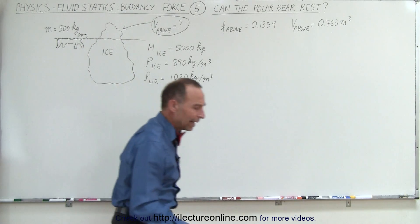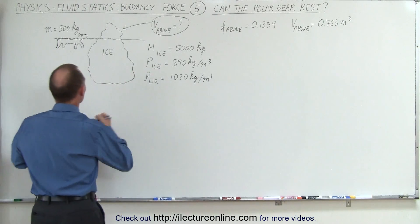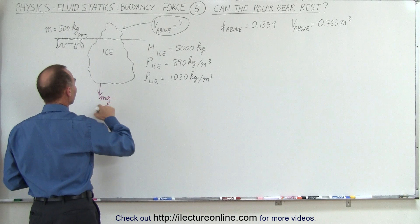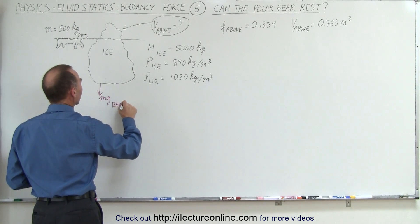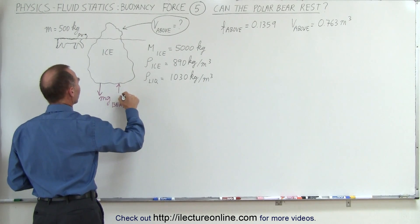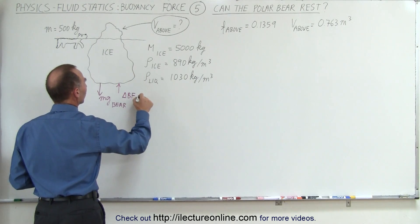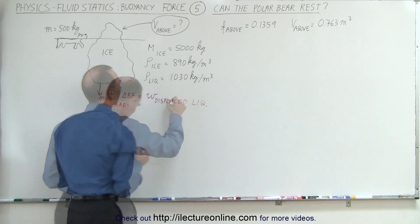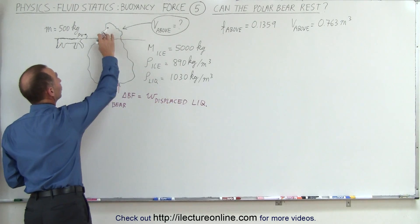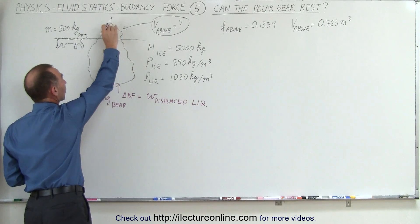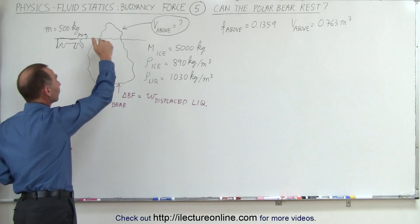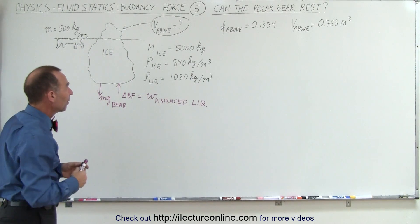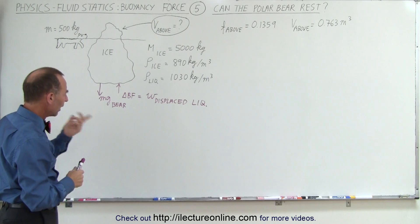So we know now that the additional weight of the bear will push down on the iceberg, so we have the additional weight mg of the bear which will require additional buoyancy force. So additional buoyancy force is going to be equal to the weight of the displaced liquid. In other words, this would be the additional liquid the iceberg can displace. Hopefully you don't need all of it in order to keep the iceberg afloat or keep the bear above the water. So how do we do that?